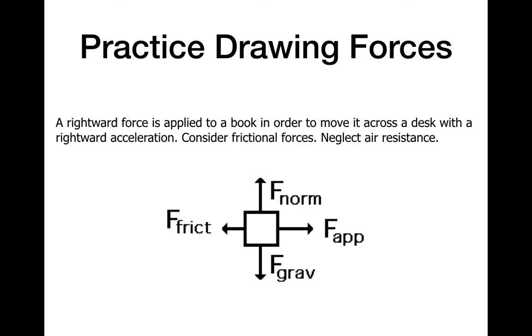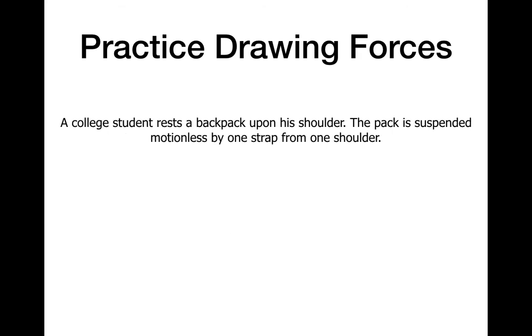Next one: a college student rests a backpack upon his shoulder. The pack is suspended motionless by one strap from one shoulder. Draw the free body diagram. It looks like this: we have tension holding it up and I have gravity pulling it down. Tension because it's a strap which is like a string which has that force of tension. And notice how the two arrows are equal - that's because it is motionless, it is not moving, so I'm not accelerating, and therefore my forces are equal.